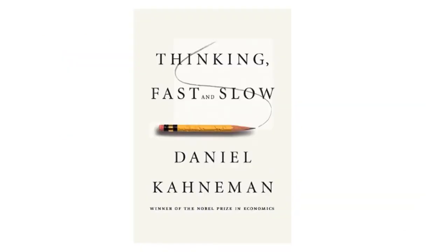Endowed with power, leaders make decisions that have high stakes and widespread ramifications. We'd like to believe that we make decisions rationally and objectively, that we are good people and our decisions are the shining beacon of social justice and education equity. The truth, however, is a far different matter. Many of the heuristics and biases discussed in this class come from the book Thinking Fast and Slow. I highly recommend you read it. In our class, I will focus on the heuristics and biases to which leaders are particularly vulnerable.